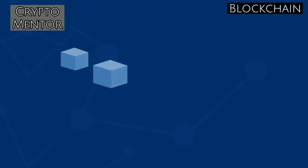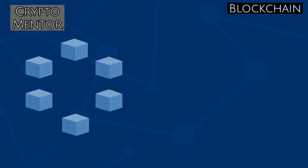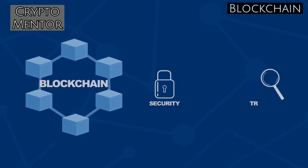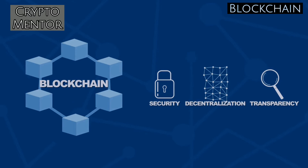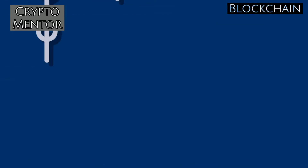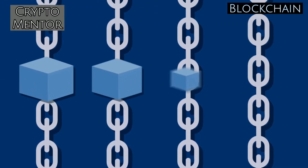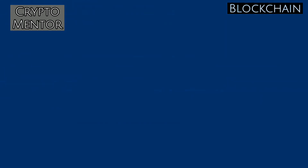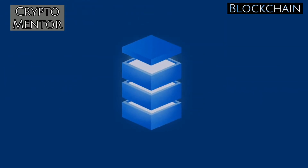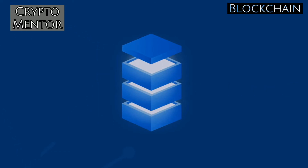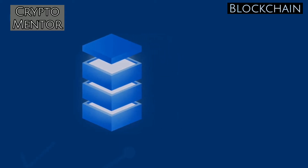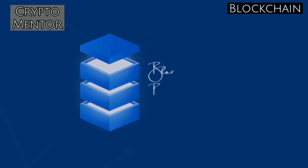In the simplest terms, blockchain can be described as a data structure that holds transactional records while ensuring security, transparency, and decentralization. You can also think of it as a chain of records stored in the form of blocks, controlled by no single authority. A blockchain is a distributed ledger that is completely open to anyone on the network. Once information is stored on a blockchain, it is extremely difficult to change or alter it.